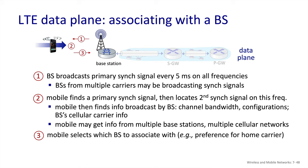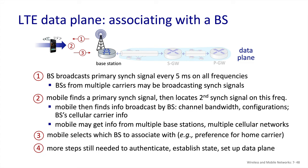As a last step, the device selects a base station to connect to. All other things being equal, it would prefer to connect to the strongest signal. However, it may instead prefer to connect to the home carrier even if there's a stronger signal from a different carrier. This is because carriers typically make more money when they don't have to pay a third party to transport data for their own user.